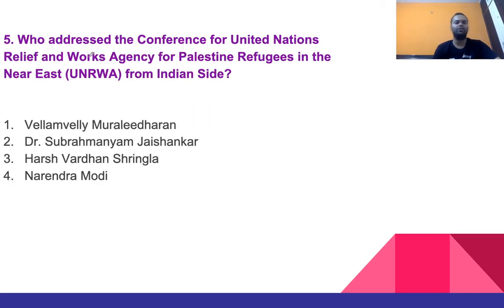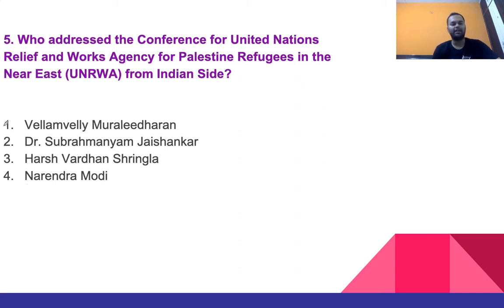Question 5: Who addressed the Conference for the United Nations Relief and Works Agency for Palestine Refugees in the Near East from the Indian side? Options: V. Muraleedharan, S. Jaishankar, Harsh Vardhan Shringla, or Narendra Modi. The right answer is the first option — V. Muraleedharan.